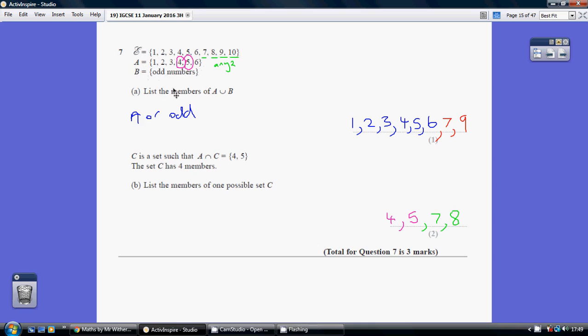So we've got to list the members of A union B. That means A or B. So A or B, so all of A,